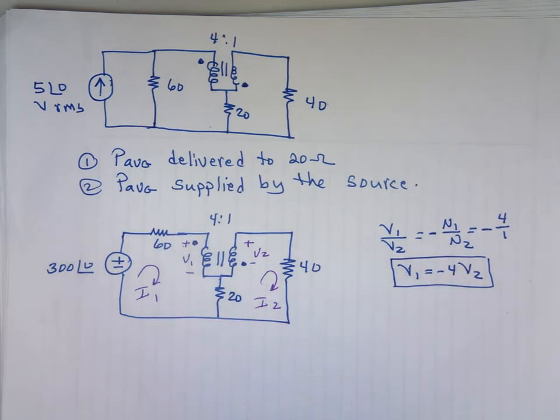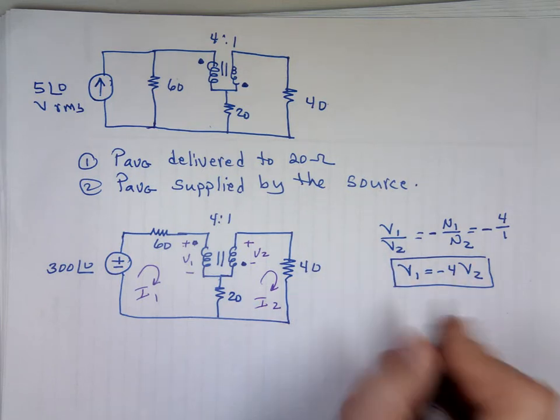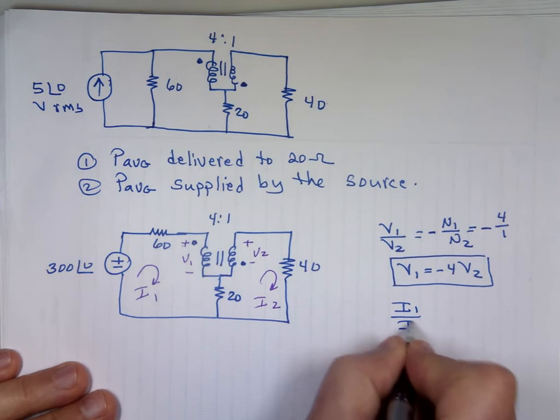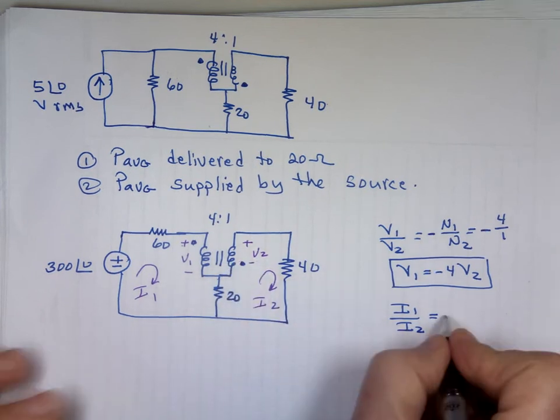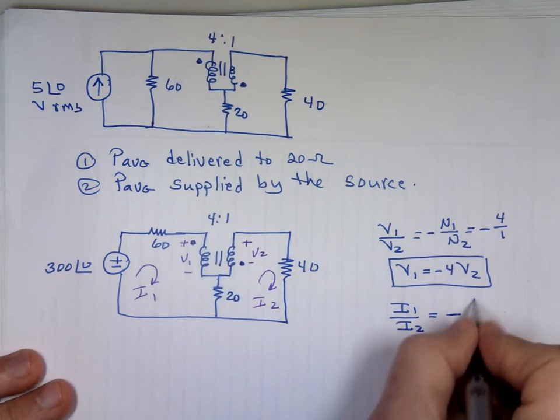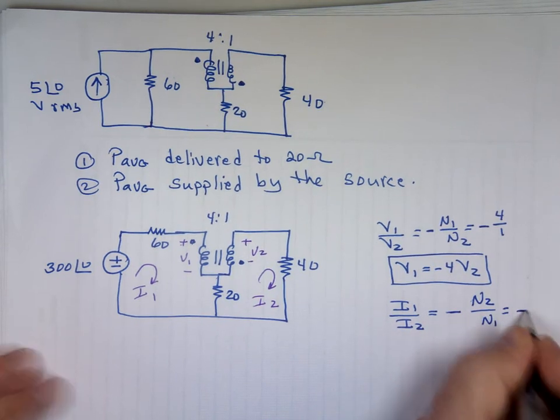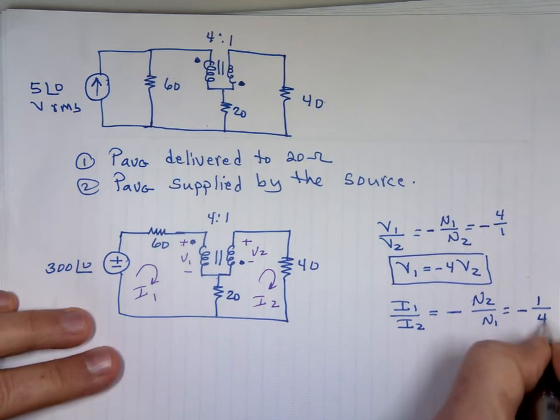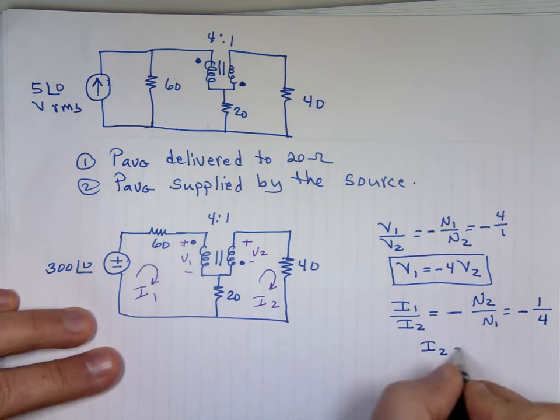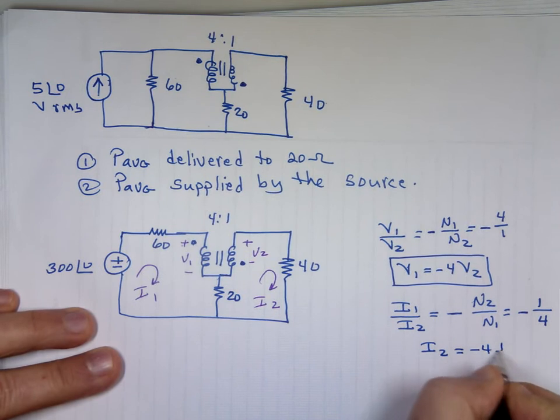That's the first equation: v1 equals negative 4 v2. Now let's look at the ratios of I sub 1 to I sub 2. Now I sub 1 is entering the dot, I sub 2 is entering the dot, that's a negative. Negative what? N2 to N1. That's a negative. What's N2 here? N2 is 1, N1 is 4, so I sub 2 is equal to negative 4 I sub 1. That's my second equation.